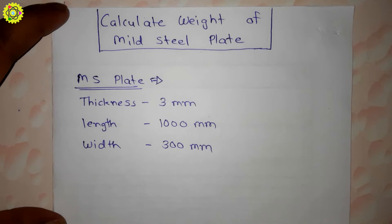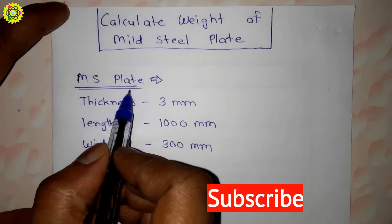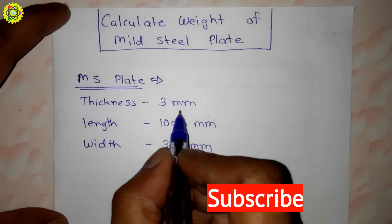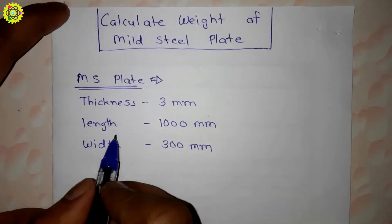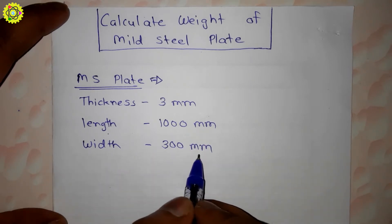Hi students, welcome. In this video we are going to understand how to calculate weight of mild steel plate. Here we will consider an MS plate having thickness 3 mm, length 1000 mm, and width 300 mm.